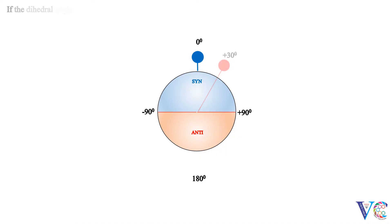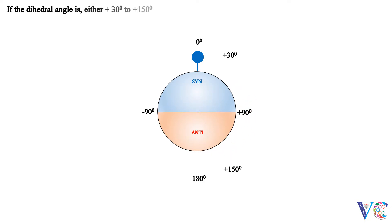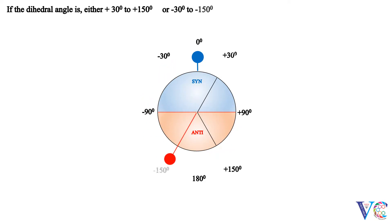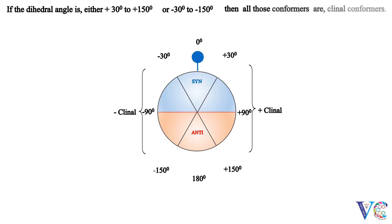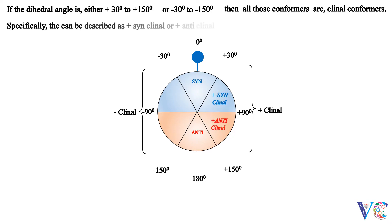If the dihedral angle is either plus 30 degrees to plus 150 degrees, or minus 30 degrees to minus 150 degrees, then all those conformers are clinal conformers. Specifically, they can be described as plus synclinal, or plus anticlinal, or minus synclinal, or minus anticlinal.